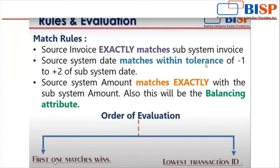The order of evaluation uses two bases: first one matches wins, meaning the first transaction satisfying the rules is selected; and the lowest transaction ID rule, where ARCS assigns a unique ID to every uploaded transaction and the transaction with the lowest ID is given priority, processed in ascending order. This concludes the basic introduction to transaction matching. Thank you.